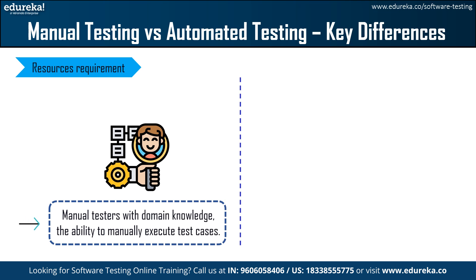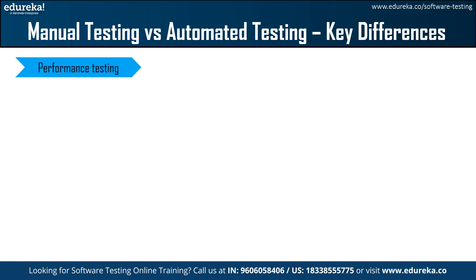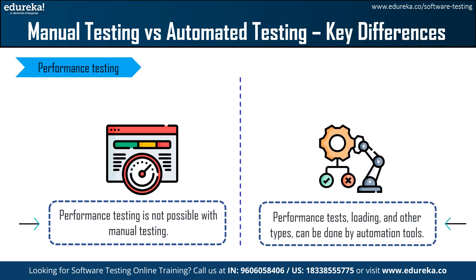Access to various test environments for modeling real-world conditions is needed for manual testing. Whereas automation testing requires automation tools and trained employees. The automation framework is designed, developed, and maintained by individuals with proficiency in programming languages such as Java, Python, and others. Next is performance testing. Performance testing is not possible with manual testing, as it is difficult to do manually. On the other side, performance tests including load, stress, and other types can only be carried out by automation tools.